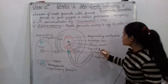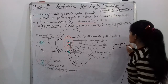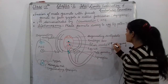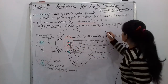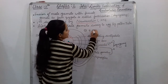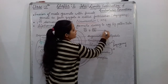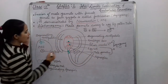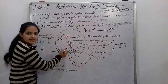When one male gamete fuses with the egg cell, this process is known as syngamy. When one male gamete fuses with the two polar nuclei — the polar nuclei are two in number, so they are 2N, and one male gamete is N — when they fuse, they form a triploid nucleus, 3N. After fertilization, the antipodals degenerate and the synergids also degenerate.